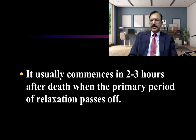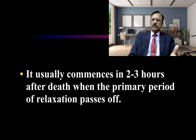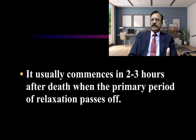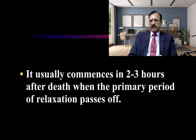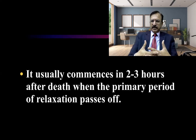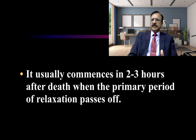Regarding rigor mortis — post-mortem rigidity — it usually commences 2 to 3 hours after death. Post-mortem anaerobic glycogenesis is occurring, with ATP being produced anaerobically, which is sufficient to keep the body in a relaxed state for some time. When that period passes, rigor mortis sets in. It is a chemical change: ATPs are depleted, the myosin-actin filaments cannot be pushed apart and become fixed in an actomyosin gel form, causing rigidity, stiffening, and slight shortening.